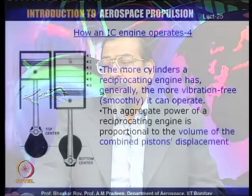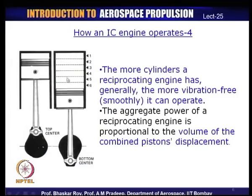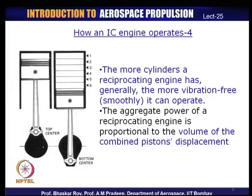The aggregate power of a reciprocating engine is normally given in terms of the total volume of all the pistons together — the displaced volume. This is the volume created between TDC and BDC, and it is what is often quoted as the capacity of the engine. The total volume across all cylinders — area of the piston head times stroke length times number of cylinders — is indicative of the engine's capacity to produce power.